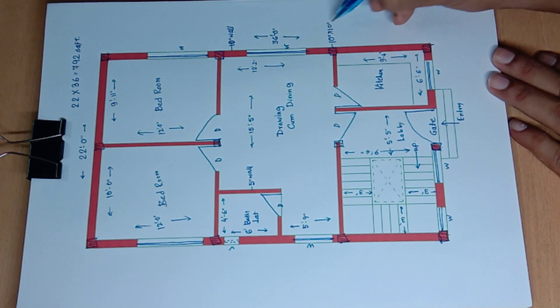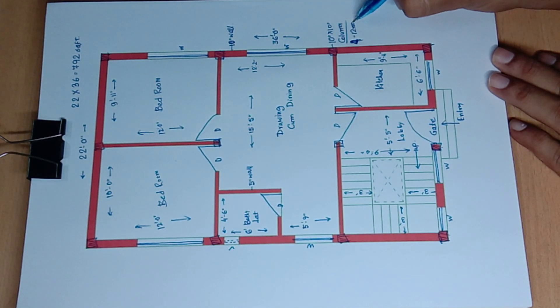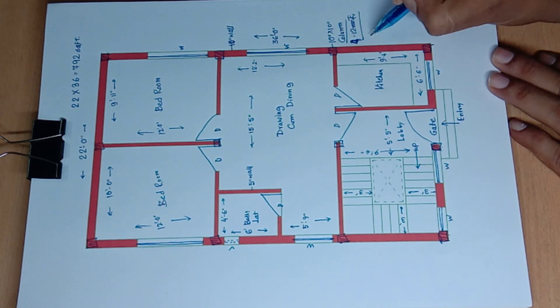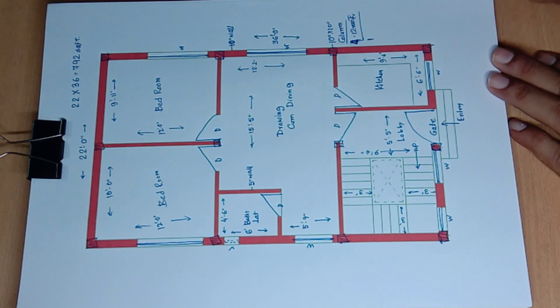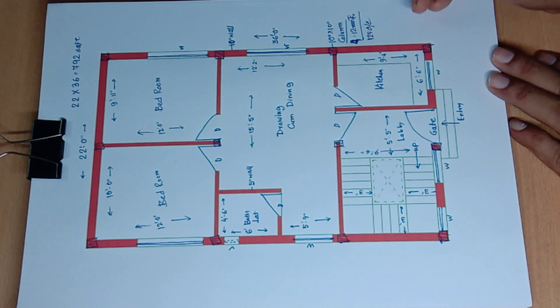10 by 10 inch column, 10 by 10 inch, 10 by 10 inch, 4 numbers. 12 mm torque, 125 center to center, 8 mm torque.